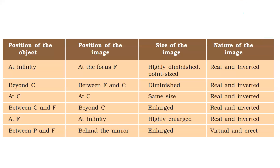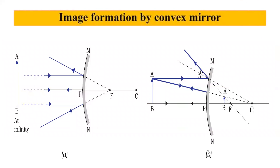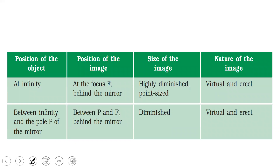Image formation by convex mirror — there are two positions. When the object is placed at infinity, diverging rays appear to come from the focus, and a virtual, erect, highly diminished point-size image is formed at the focus behind the mirror. When the object is placed anywhere between infinity and the pole, you will get a virtual, erect, and diminished image forming between the pole and the focus, behind the mirror.